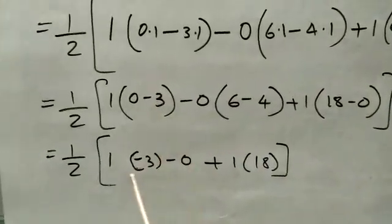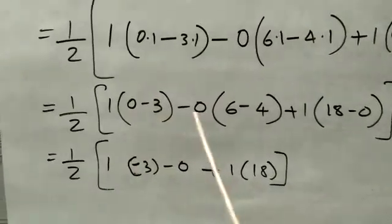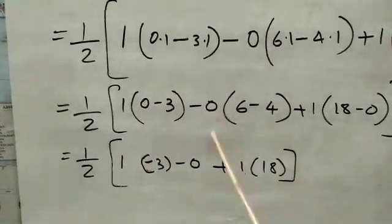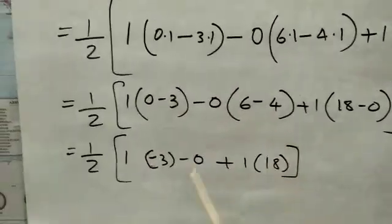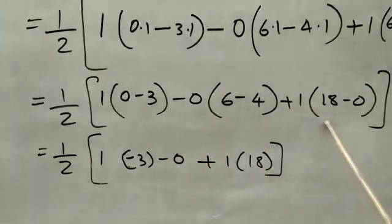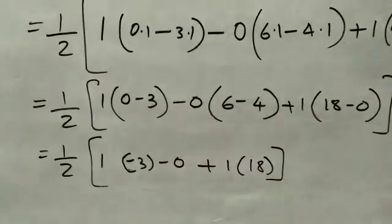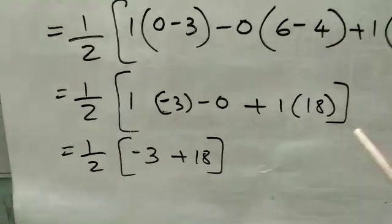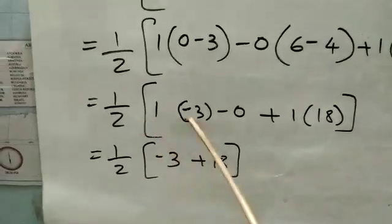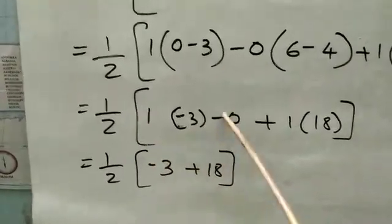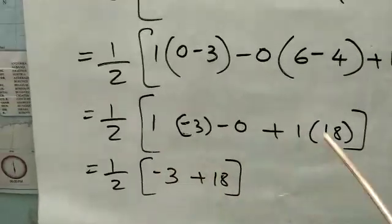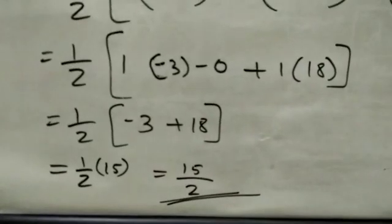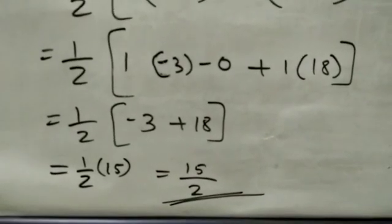Next step: 0 minus 3 equals minus 3. Then 1 into (minus 3 minus 3) gives minus 3; 0 into that term vanishes. So we get: minus 3 plus 18. The final answer for problem 1 is calculated from half of 15.